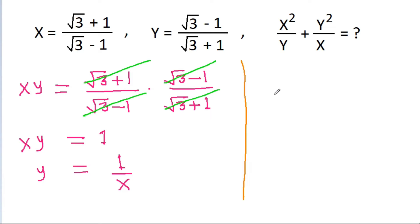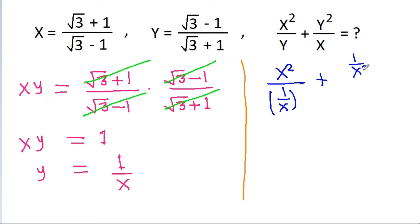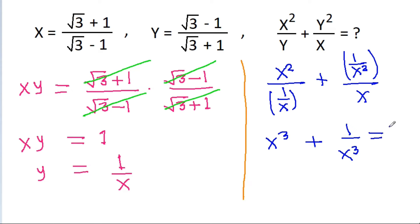So we have to find the value of x squared by y, which is x squared times x, plus y squared times x squared by x, and it simplifies to x cubed minus 1 by x cubed. So we have to find the value of x cubed minus 1 by x cubed.